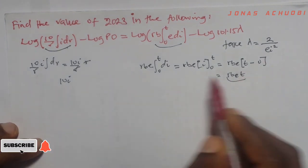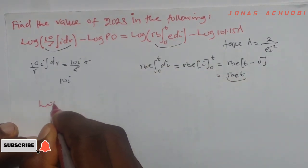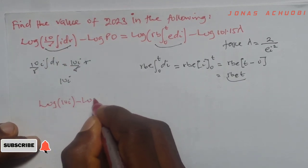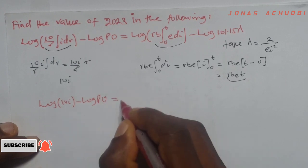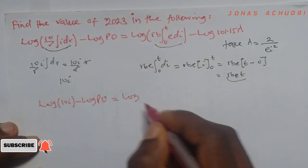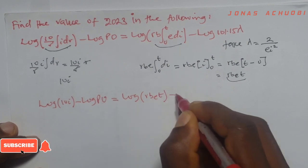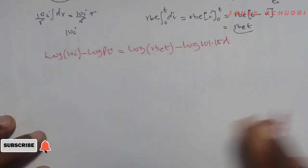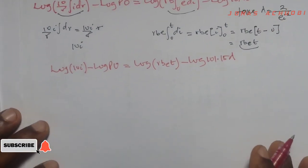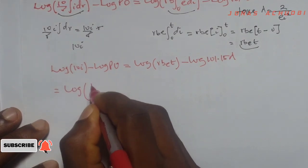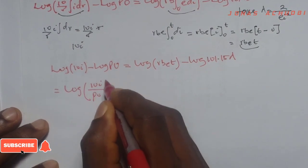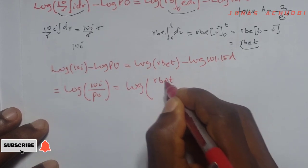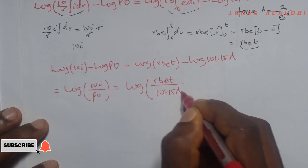If we put these two terms back here, we have log, this becomes 10i minus log po, equal log, this becomes rbet minus log 101.15 times lambda. We can now apply a lot of logarithms that we already know. So this gives us log 10i over po, equals to, the right hand side gives us log rbet over 101.15 times lambda.